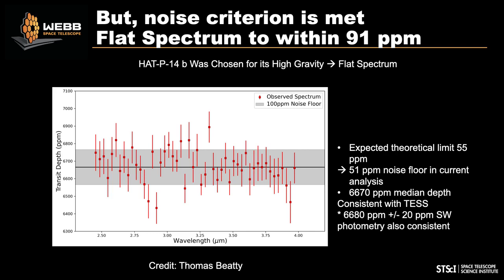This shows the transmission spectrum Thomas BD found for the long wavelength time series, and it is flat as predicted. There is some excess noise: the theoretical expectation was 55 parts per million and the measured scatter was 91 parts per million. But it looks flat as expected, precision is good, and we found consistency between the short wavelength photometry and grism spectroscopy.